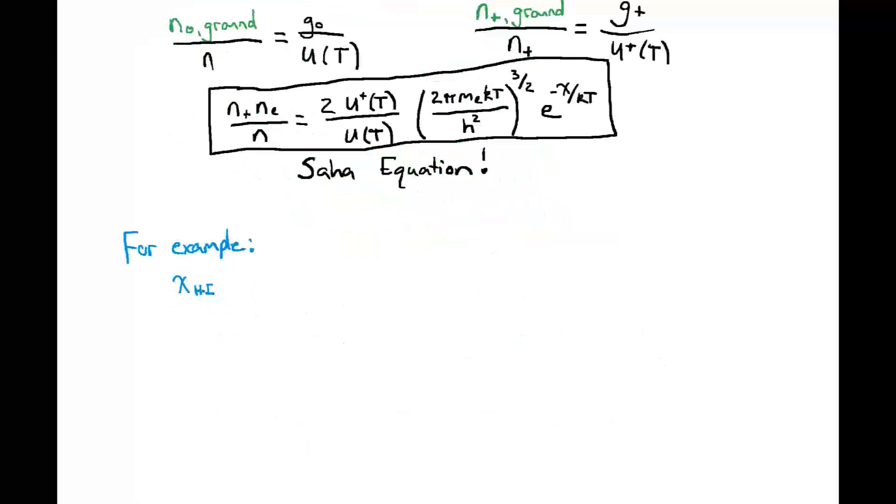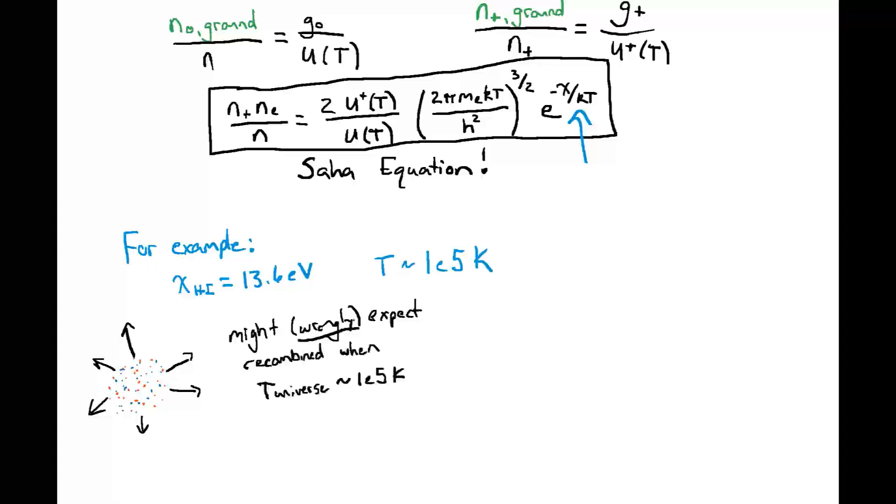So let's take an example of the Saha equation to show how it works in practice. If we consider neutral hydrogen, the ionization potential is 13.6 electron volts. So if you just naively plug that in and asked at what temperature does that exponent of e become unity, you get a temperature of about 100,000 Kelvin. So you might expect that after the Big Bang, when the universe was composed of protons and electrons in a plasma that was gradually cooling down as the universe expanded, you might expect, incorrectly, that the universe would become neutral, which is to say that it recombined, when the temperature was around 100,000 Kelvin.